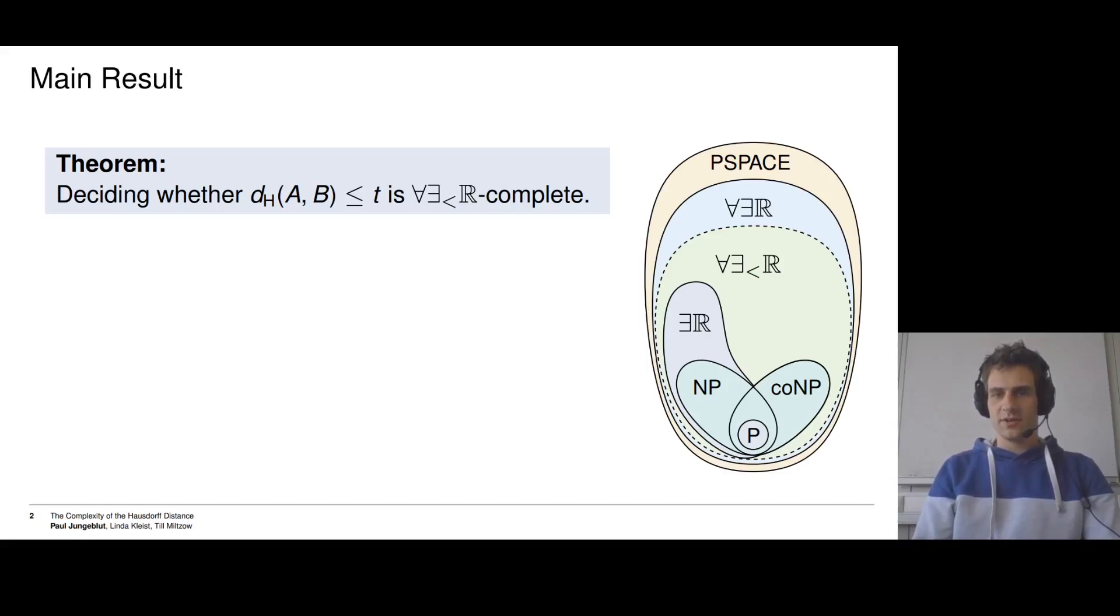At the bottom of this picture on the right we have the complexity class P, which itself is part of NP and coNP. NP is part of ∃ℝ, a complexity class that has received lots of attention over the last years. And ∃ℝ is contained in this green complexity class strict ∀∃ℝ, which itself is inside ∀∃ℝ, which itself is inside PSPACE.